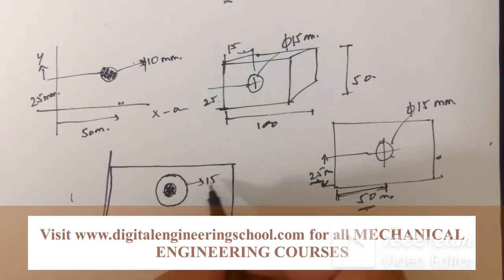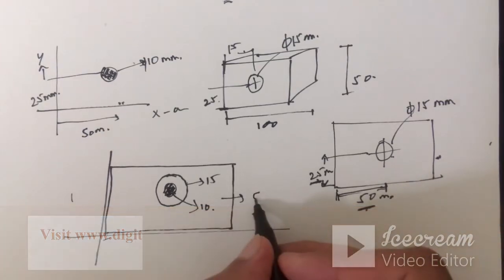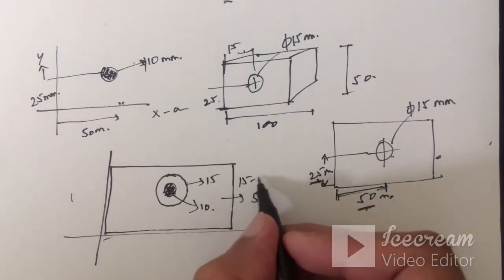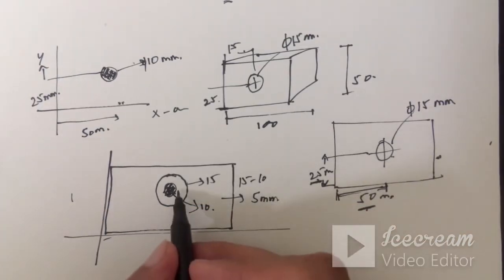So the hole diameter is 15 mm, the pin diameter is 10 mm and we have a difference of 5 mm, that is 15 minus 10. So this is the gap here.